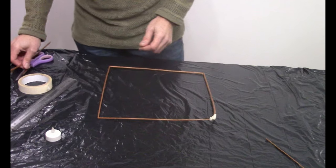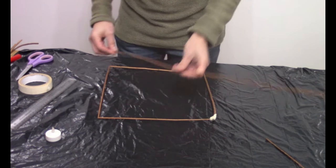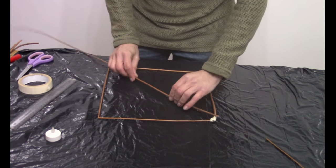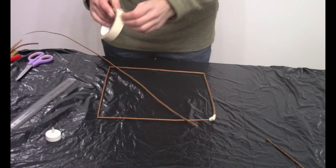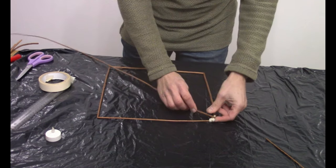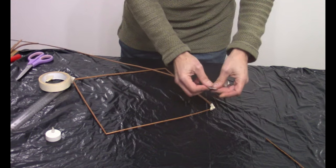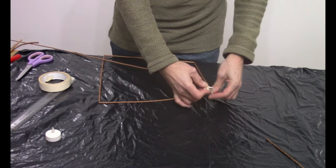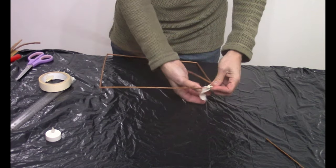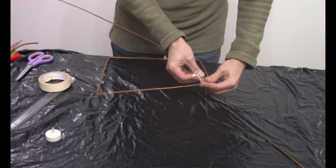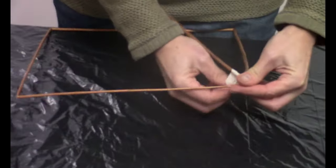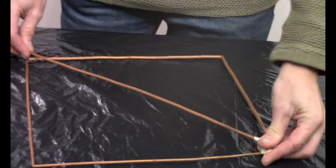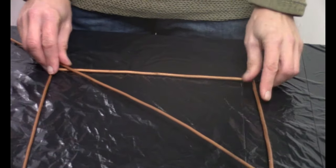Now let's take another piece of willow, and we're going to attach it across there to make a cross. Simply attach it like so, and then we've got a square.